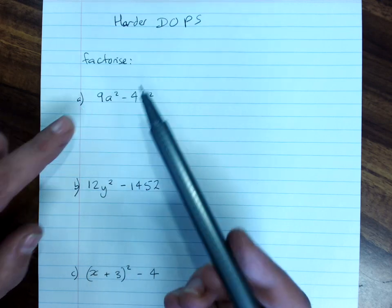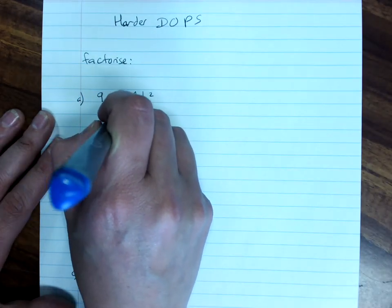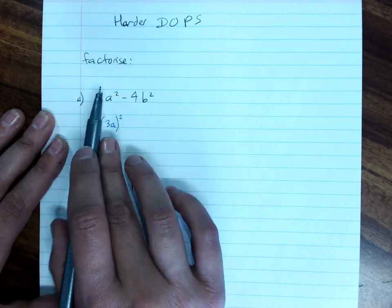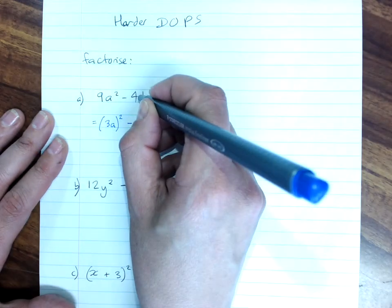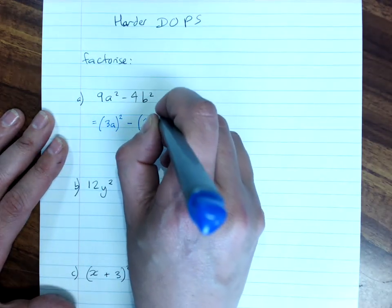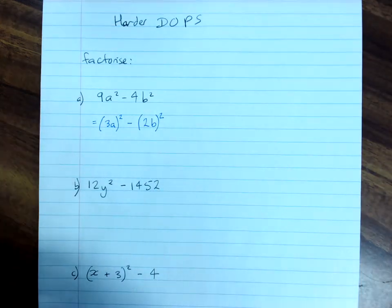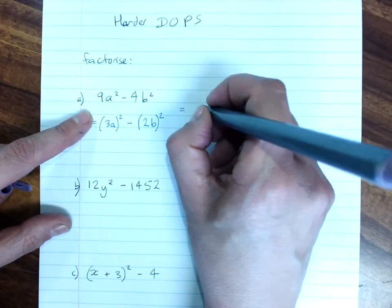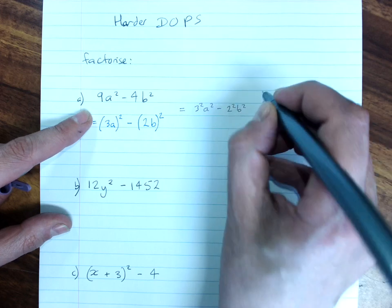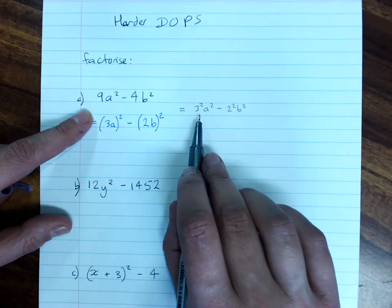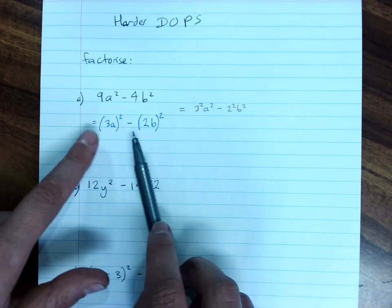So, 9a squared is the same as 3a all squared. 9 is 3 squared, a squared, obviously. The same here. This is the same as 2b all squared. We're using our index laws. There was an extra line of reasoning in there, if you wanted, which is 3 squared a squared minus 2 squared b squared, if you prefer. I don't think it's very necessary.